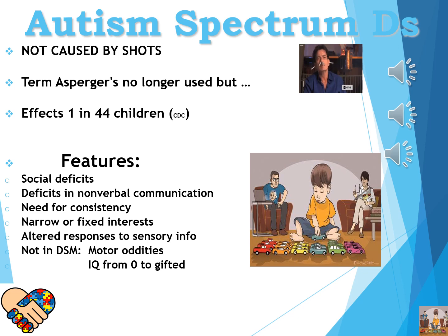There have been many large-scale studies with tens of thousands of children, some whose parents opted not to give shots and some whose parents did. If shots caused autism, you'd expect a significantly higher rate in the vaccinated group. Only one study found this outcome — it was later retracted by the journal, and the author engaged in fraudulent data creation and interpretation. And yet so many people believe shots cause autism.